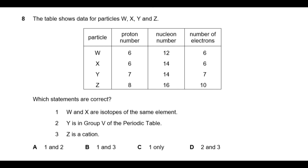Statement 2 says Y is in group 5 of the periodic table. Group 5 elements have 5 electrons in their outermost shell. Y has 7 electrons total — 2 in the first shell and 5 in the second shell. So yes, it has 5 electrons in the valence shell, meaning Y is in group 5 of the periodic table. That statement is also correct.